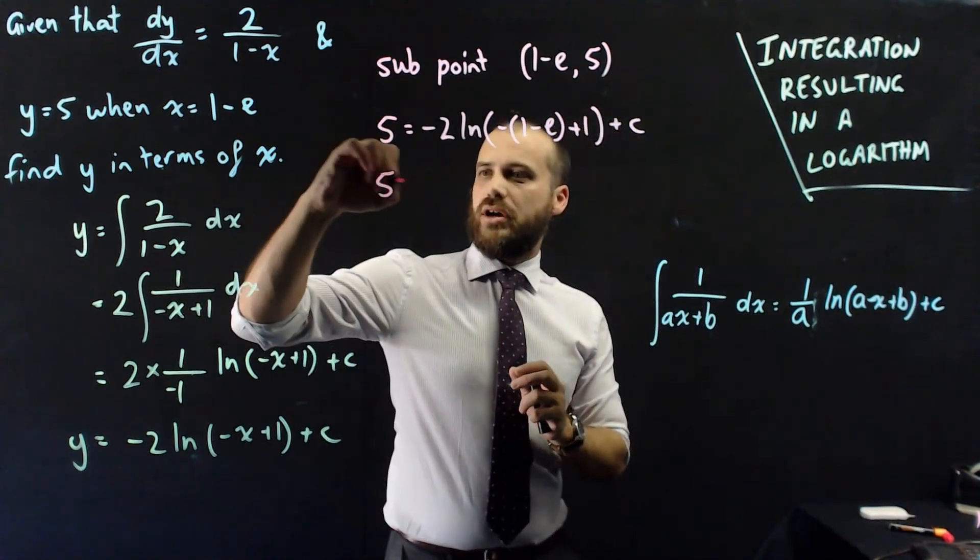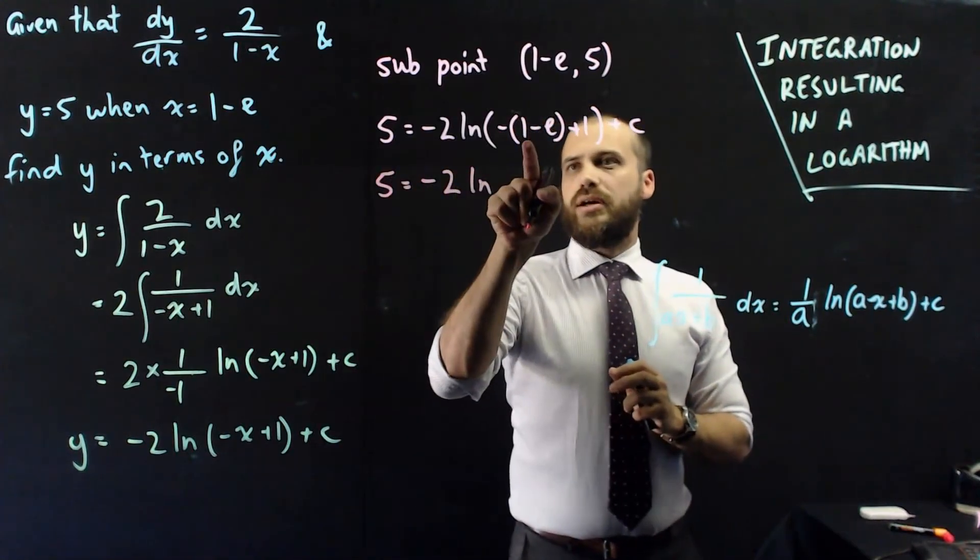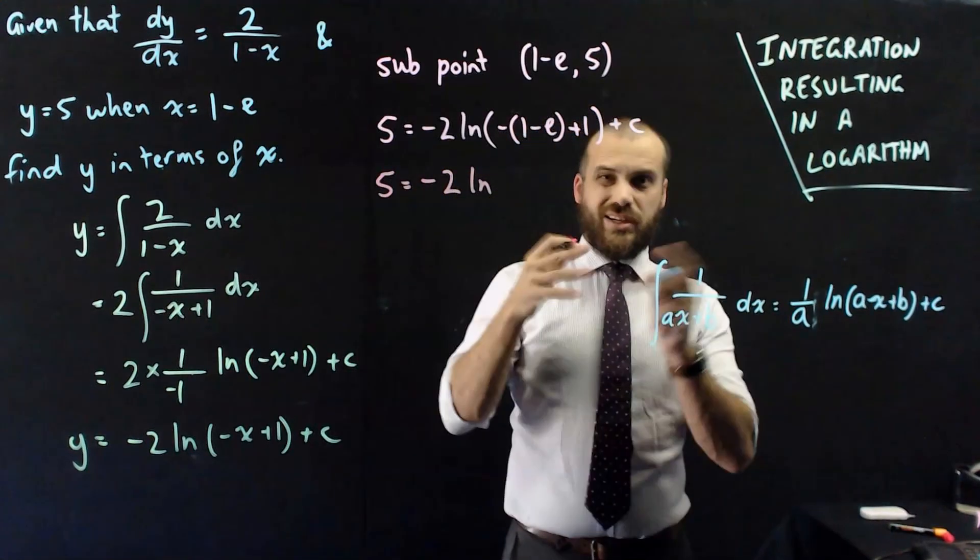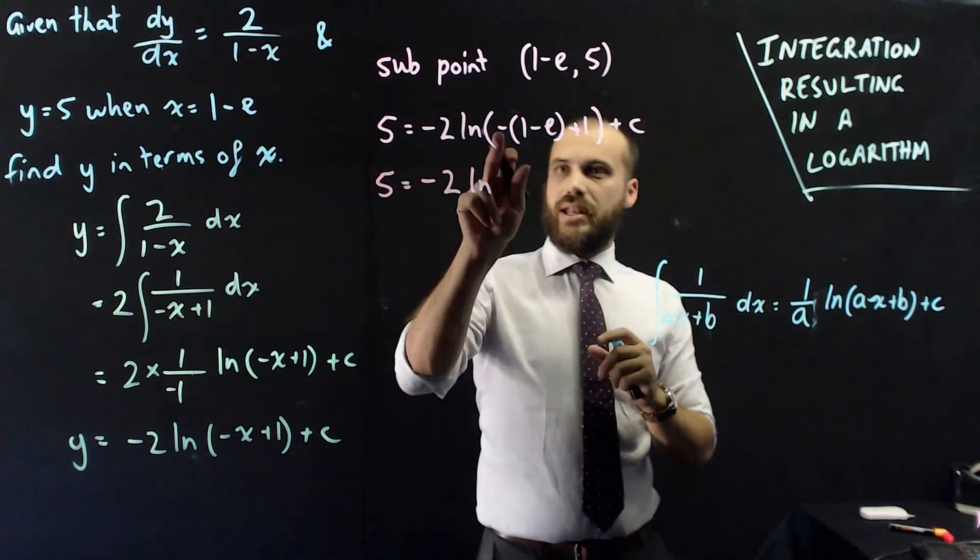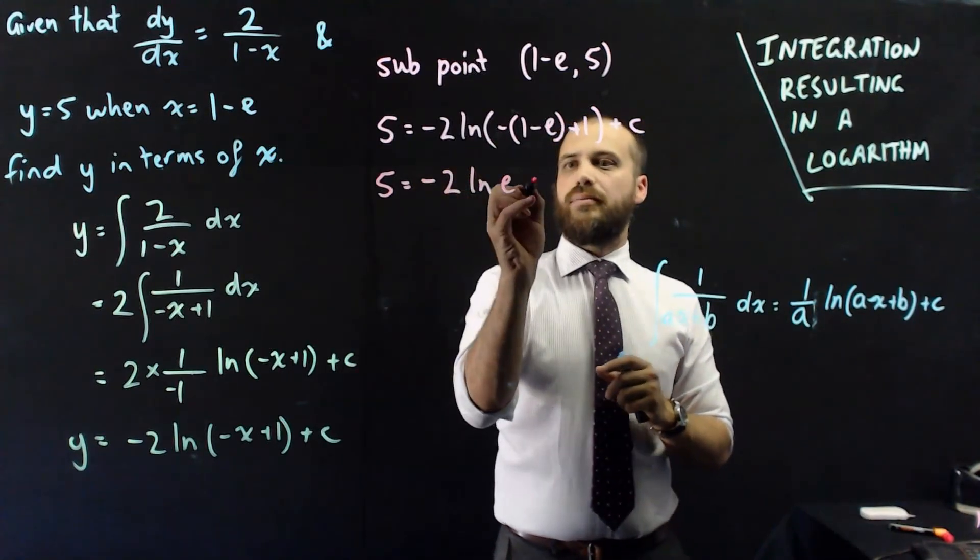And so, when we tidy this up a bit, we'll get 5 equals negative 2, ln, negative 1, plus 1. So, the negative 1 plus 1 are going to cancel out. And negative negative e is just e, so ln e, plus c.